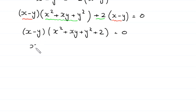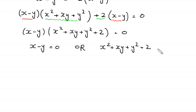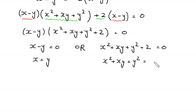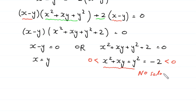From here, either x minus y equals 0, or x squared plus xy plus y squared plus 2 equals 0. From the first case, x equals y. For the second case, x squared plus xy plus y squared is always greater than or equal to 0, so the left side is greater than 0, while the right side is negative 2, which is less than 0. Therefore no solution is possible from this equation, and we only consider x equals y.